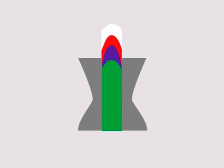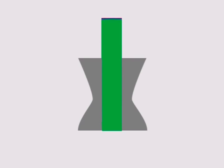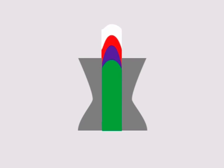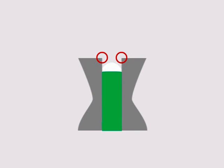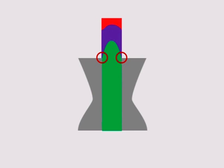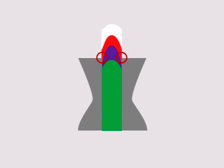As the polymer leaves the die, these speeds try to equalize — catch up, if you will — so that the layer near the surface of the die rapidly increases from almost zero to the average speed of the rest of the melt, creating a high-stress area.